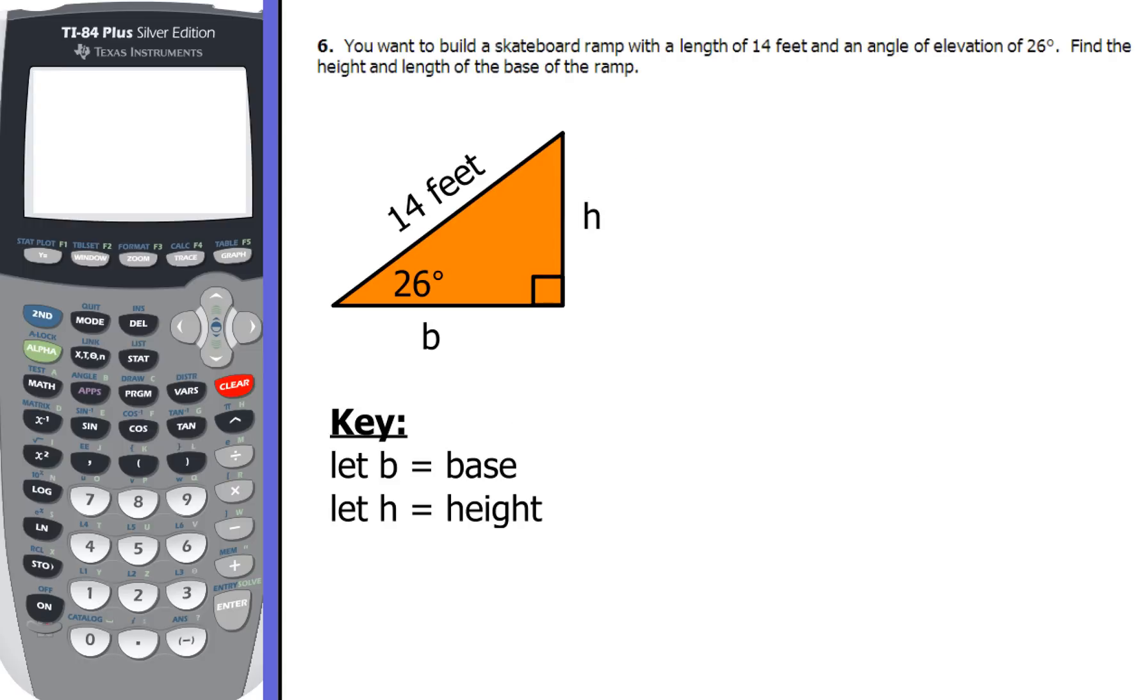Now let's take a look at example number six. Here, we want to build a skateboard ramp with a length of 14 feet and an angle of elevation of 26 degrees. Find the height and the length of the base of the ramp. So what I want you to do is take those two numbers, 14 feet and your angle of elevation of 26 degrees, and after you draw the right triangle, I want you to put those two numbers in where you think they go on the triangle.